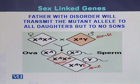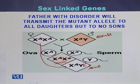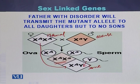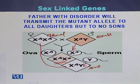The son receives a Y chromosome from the father and a normal X chromosome from the mother. So all the sons produced by this couple will be normal. The daughters receive an X chromosome from the father and an X chromosome from the mother, so the daughters will be carriers of the disease.